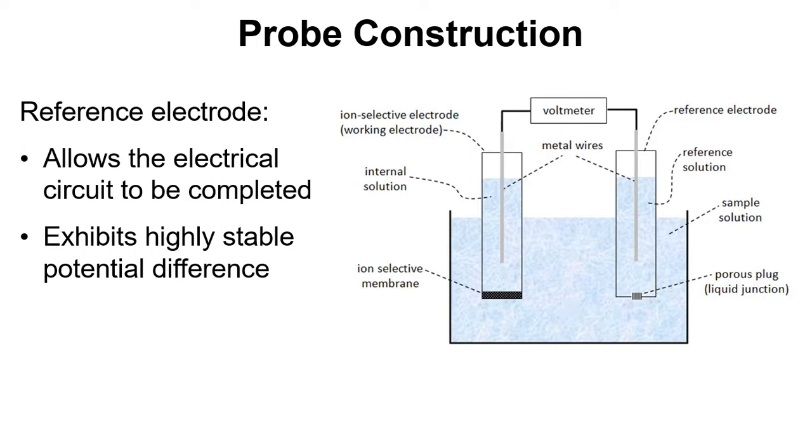Although as we've seen in a previous video that we can get drift over this. But the idea is that we get this stable fixed potential difference between the wire and the sample solution. And we require this reference electrode in order to take readings. If we didn't have this reference electrode, we wouldn't be able to complete the circuit and we wouldn't be able to get a voltage reading for the potential difference of the probe.